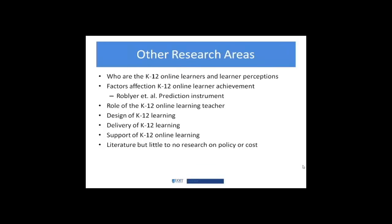The other areas people are looking into include: who are the learners and what are their perceptions of learning in the K-12 environment? What factors affect K-12 learner achievement? Robler et al. have developed a prediction instrument that has been validated quite successfully for predicting student success in the online environment. There's also research on the role of the K-12 online learning teacher — how do we prepare people to teach online, what is the role of pre-service education versus professional development, how do we manage workload, and what policies need to flow from that? The design of K-12 online learning includes the pedagogical stance or framework, while delivery involves decisions about blended, synchronous, or asynchronous formats, infrastructure, and technology support.